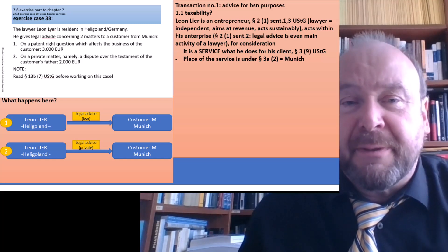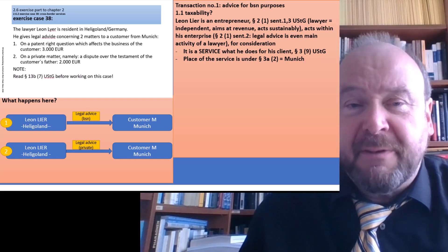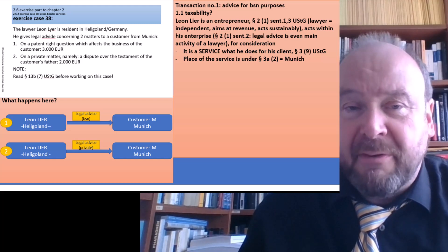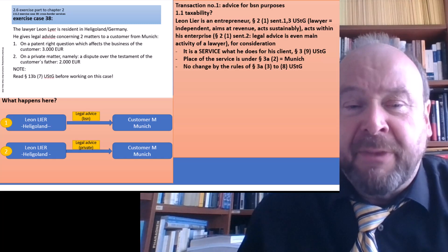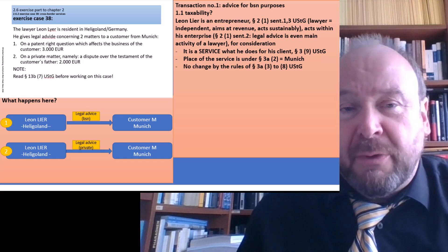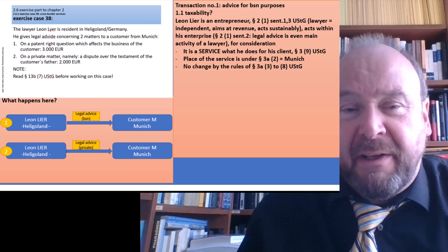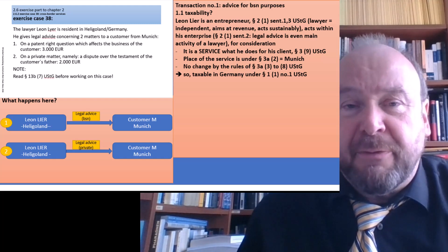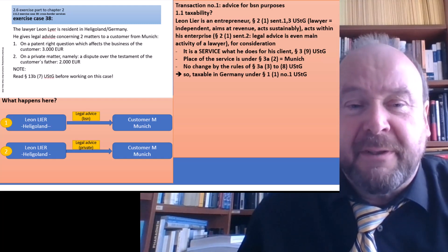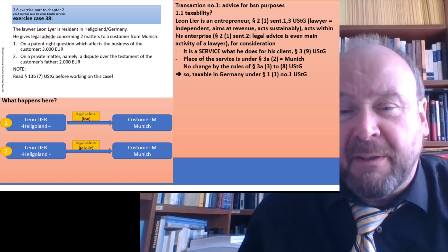We just need the place of the service, which under the general rule is Munich — the place where the customer has established his business. So even if they meet and talk in Hamburg, the place of service is deemed to be Munich. There is no special rule in §3a which might change that. Munich is in Germany, so the whole affair is taxable in Germany under §1(1) number 1.